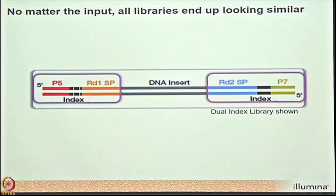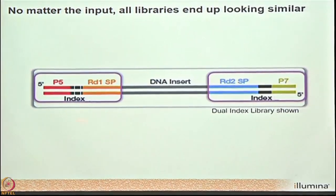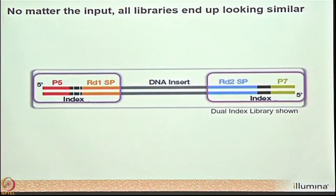This is what a library looks like — it contains a DNA insert of unknown sequence in the middle, flanked by two adapter regions: Rd1 and Rd2. These are the two kinds of adapters, P5 and P7.